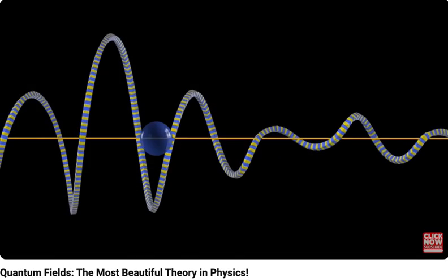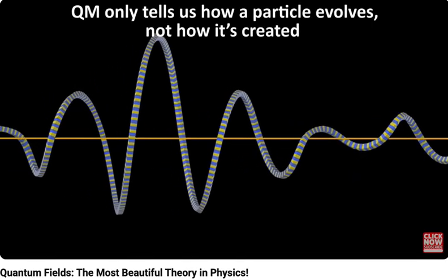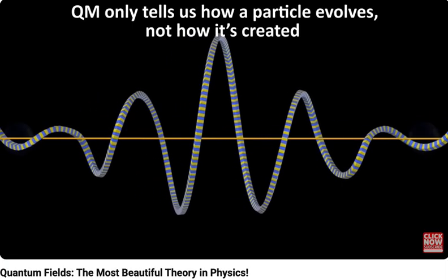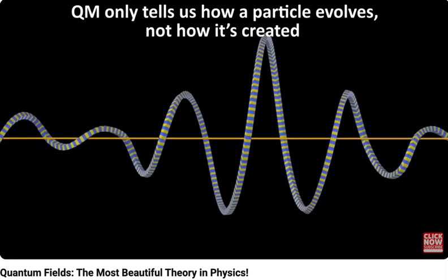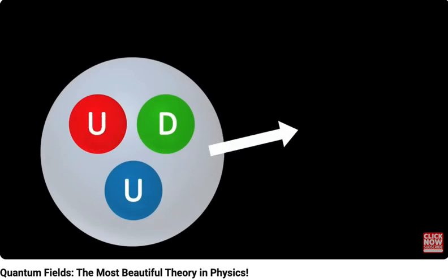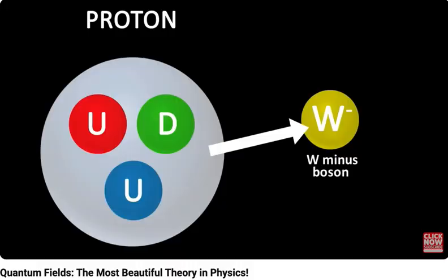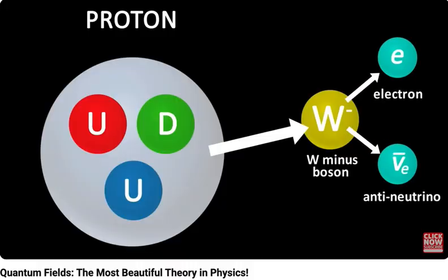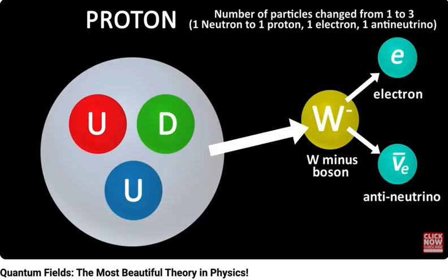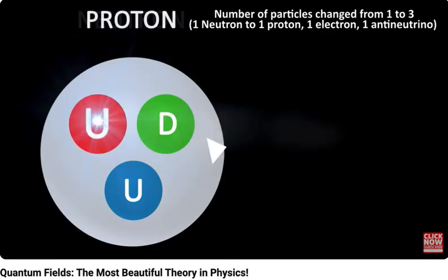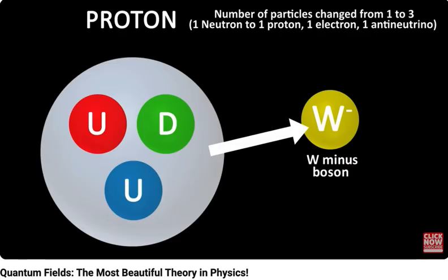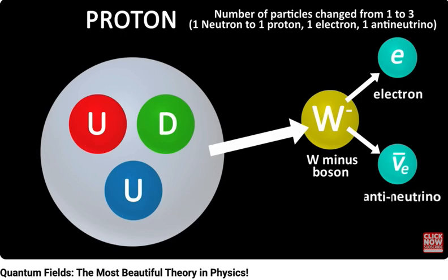A second problem with quantum mechanics is that it only tells you how a particle evolves over time, that is, how it goes about its business. It does not tell you how it is created or annihilated. So it can't account for things like beta decay, due to the weak nuclear force, where a neutron transforms into a proton, an electron, and an antineutrino. In this case, quantum mechanics breaks down, because it doesn't work if we change the number of particles. In the case of the beta decay I just described, the down quark of a neutron decays into an up quark, changing the neutron to a proton, and at the same time emits an electron and an antineutrino with a mediating W boson. This change to other particles can't be described by quantum mechanics.